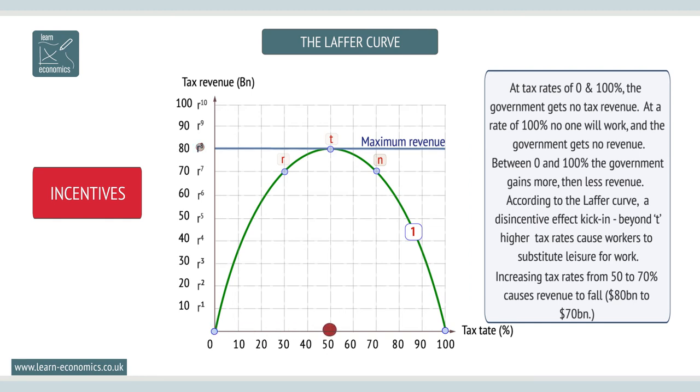In the example, increasing tax rates from 50% to 70% causes revenue to fall from $80 billion to $70 billion.